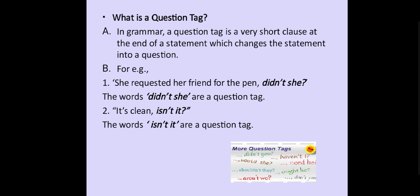A short phrase such as 'isn't it', 'didn't she', 'don't you' — that is added to the end of a sentence to check information or to ask if someone agrees with you, or often used for checking information that we think we know is true.